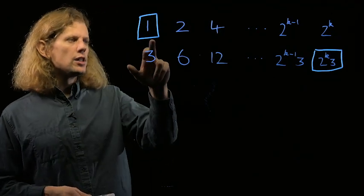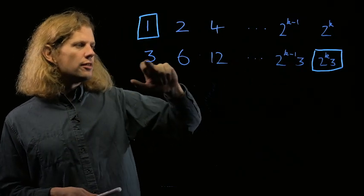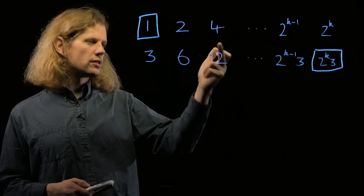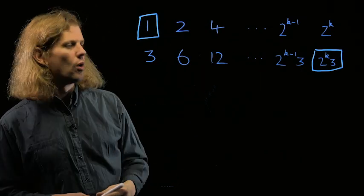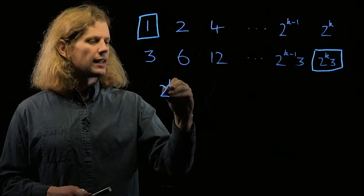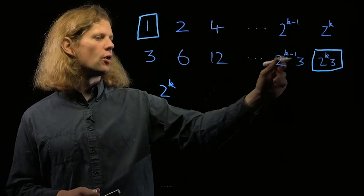If the last term in the top row is 1, then that means we can use or not use any of the bottom row. So we can use or not use 3, use or not use 6, use or not use 12, and so on. And that gives us a term of 2 to the k, because there are k different choices of things to use or not use.